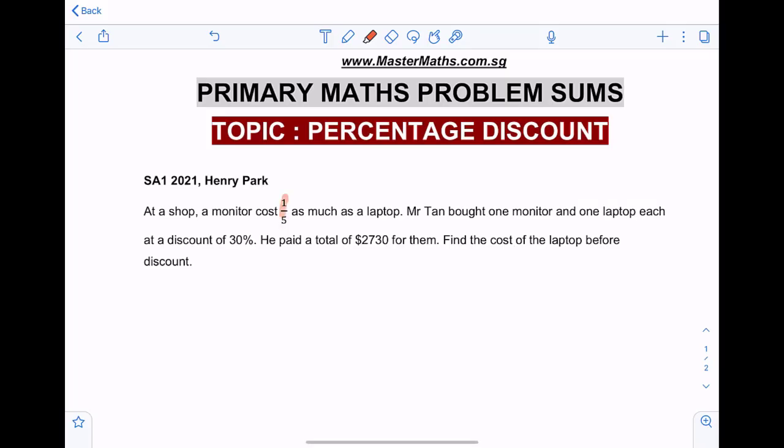At a shop, a monitor costs one-fifth as much as a laptop. So what does this mean? The monitor will take on one unit of cost and the laptop will take on five units of cost. Mr. Tan bought one monitor and one laptop each at a discount of 30%. He paid a total of $2,730 for them. Find the cost of the laptop before discount. All right, so basically the original price of this laptop.